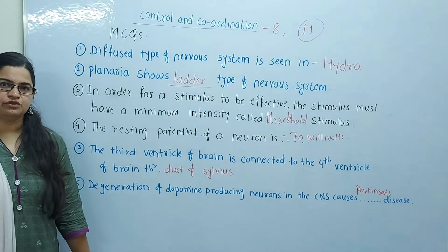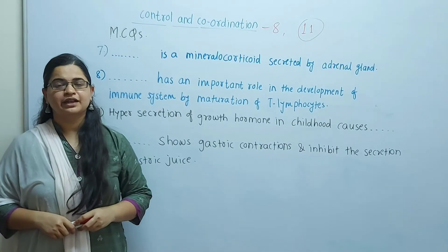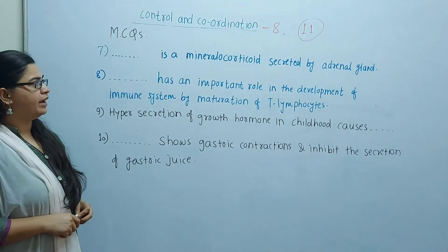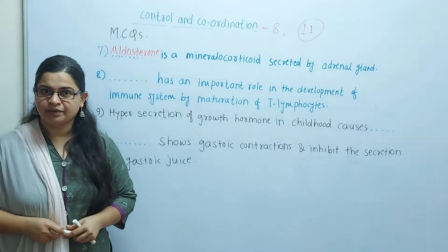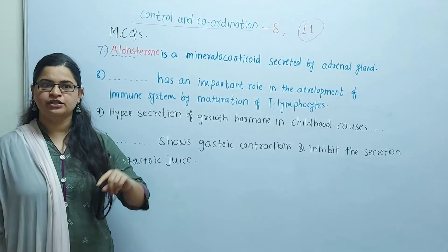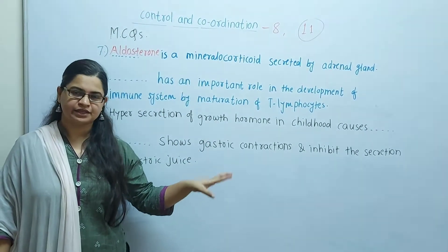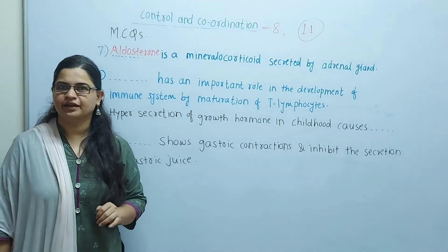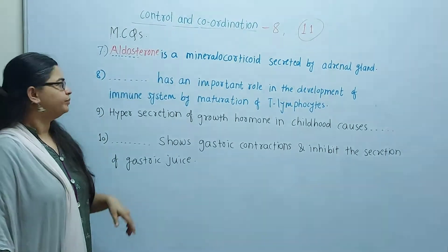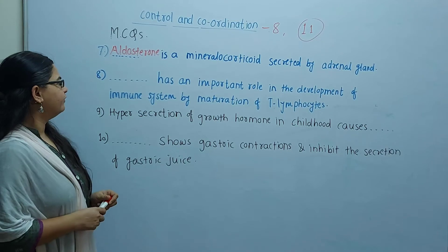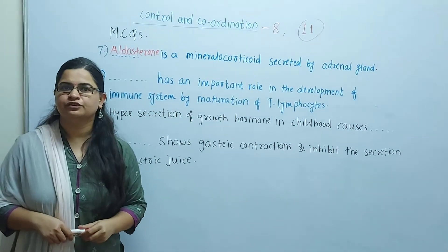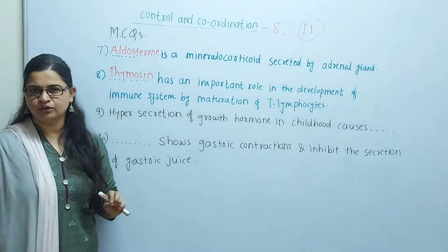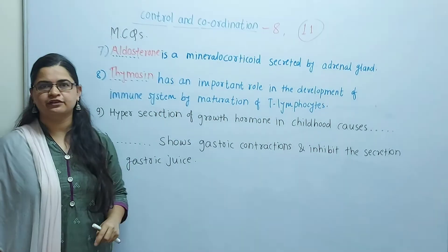The next question: aldosterone is a mineralocorticoid secreted by the adrenal gland — you have to remember that. The following question: thymosine has an important role in the development of the immune system by the maturation of T lymphocytes. Thymosine actually plays a very important role in the maturation of T lymphocytes in our body.